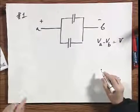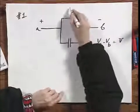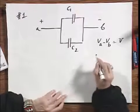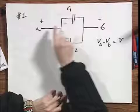And V A minus V B, let's call it V, higher here than there. And this capacitance is C1, and this capacitance is C2.